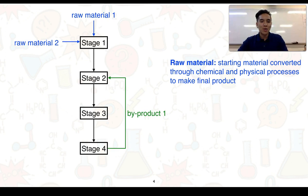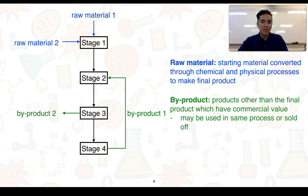We can also have what we call by-products. By-product one is produced in stage four and can be put back into stage two, and by-product two is produced in stage three. By-products are products other than the final product which have some type of commercial value, meaning they can be used within the same process or they could essentially be sold off for profit.